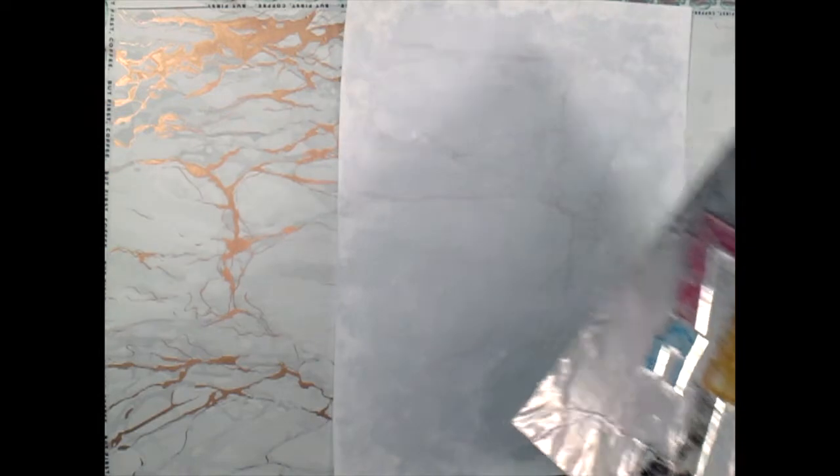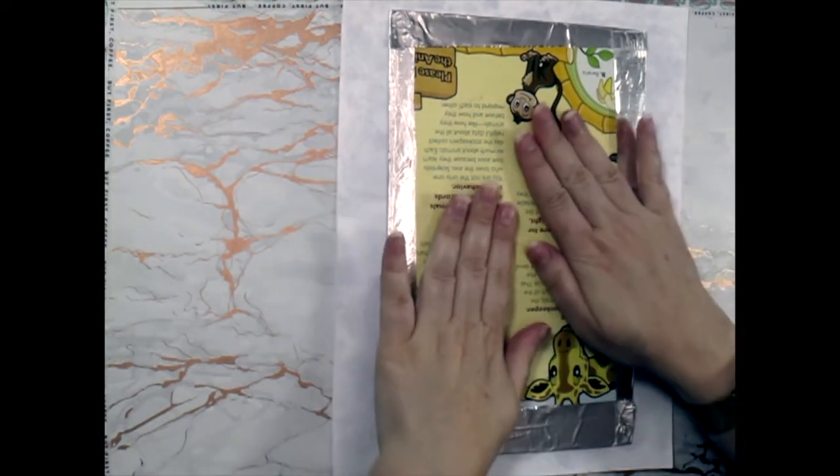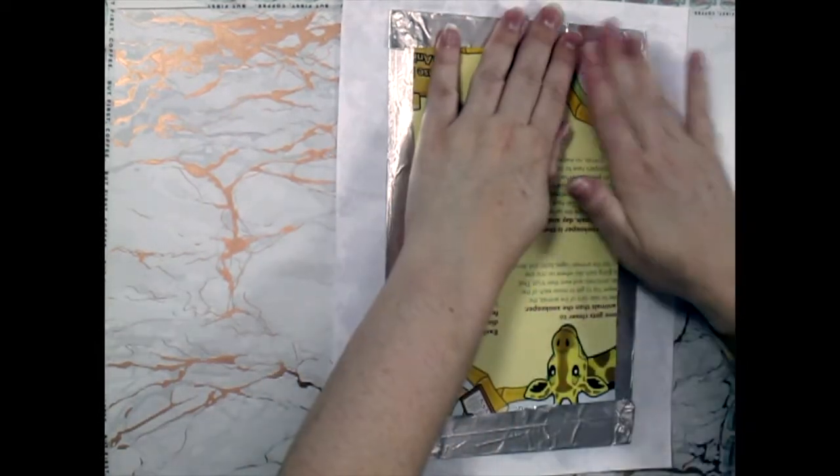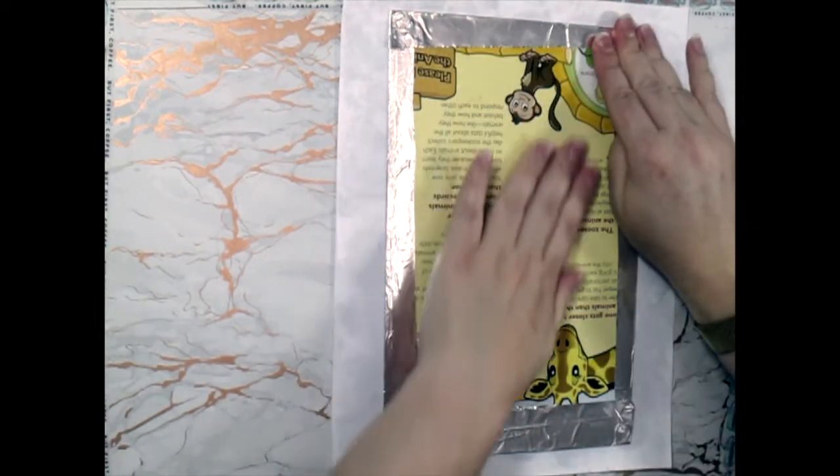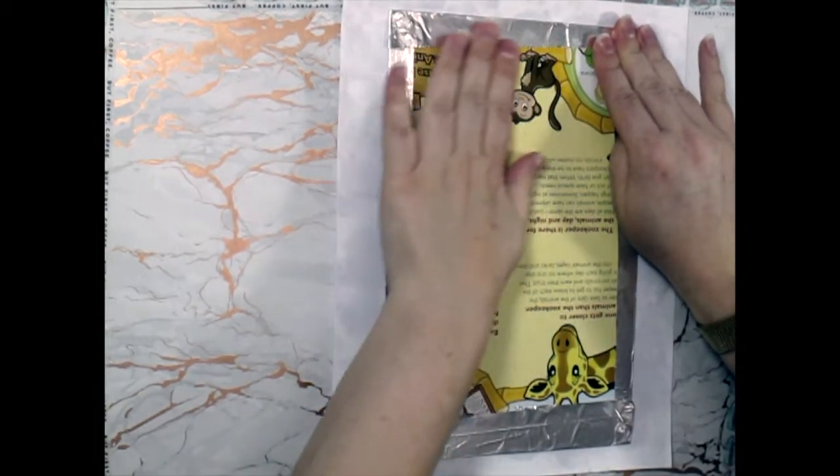So I'm going to flip over my robot printing plate and I'm going to smooth it down. And I'm going to make sure I press along each of the sections a couple times.